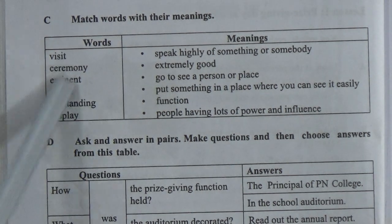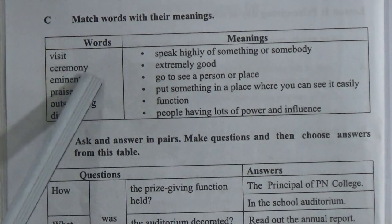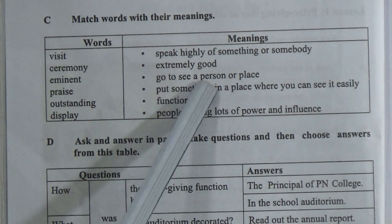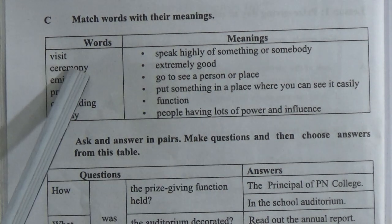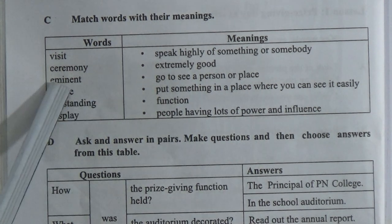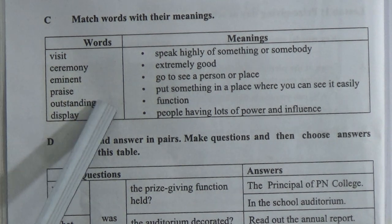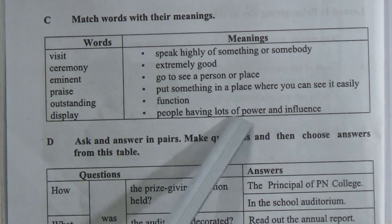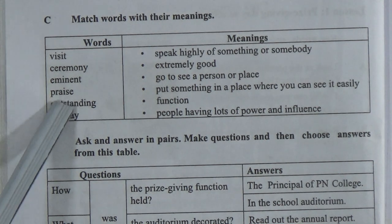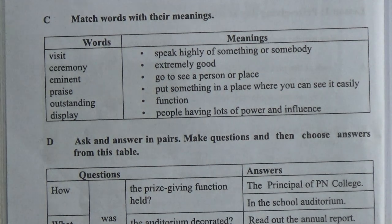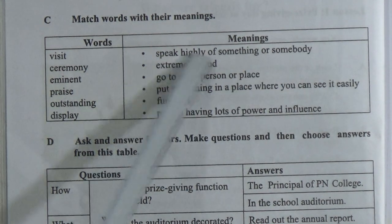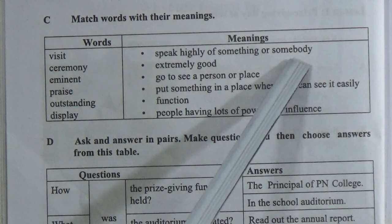Number one: 'visit' — the meaning will be matched with 'go to see a place.' Visit would be matched with 'go to see a place.' Number two: 'eminent' — match with 'people having a lot of power and influence.' Number three: 'praise' — speak highly of something or somebody. It's called praise.